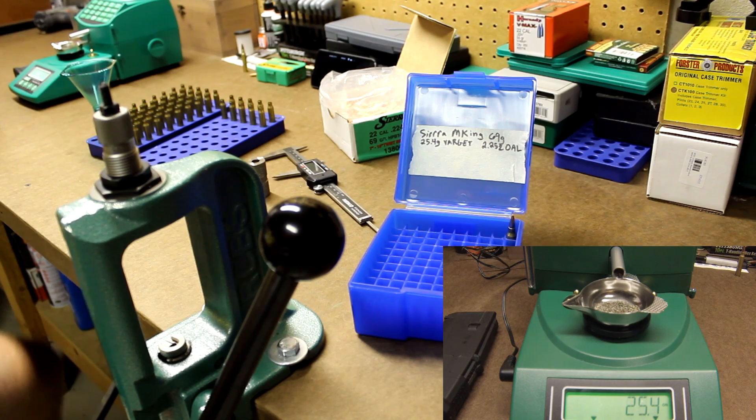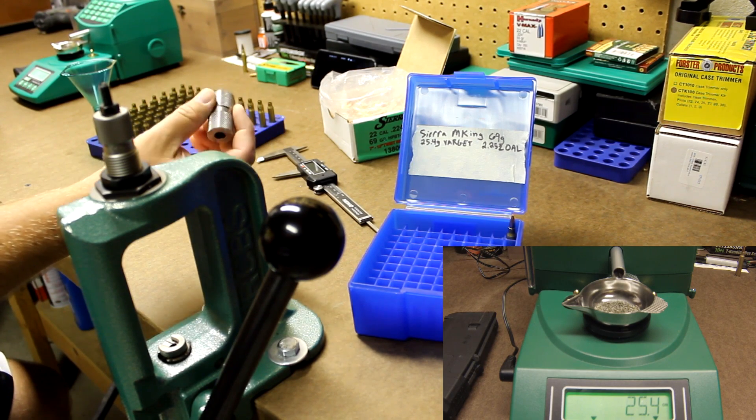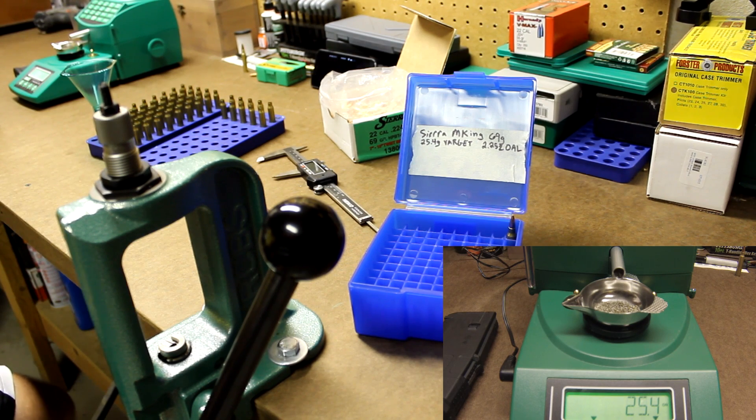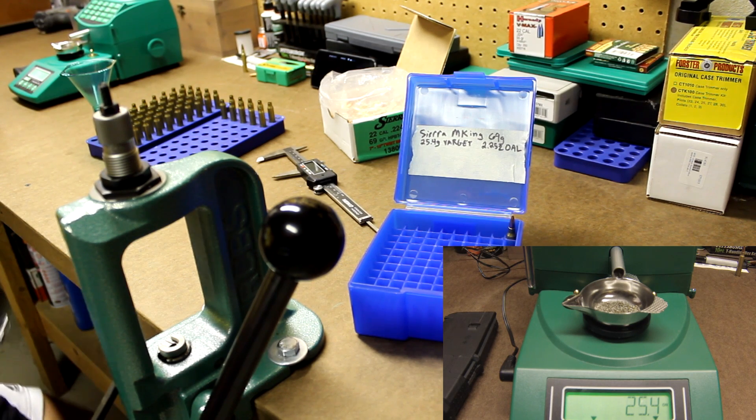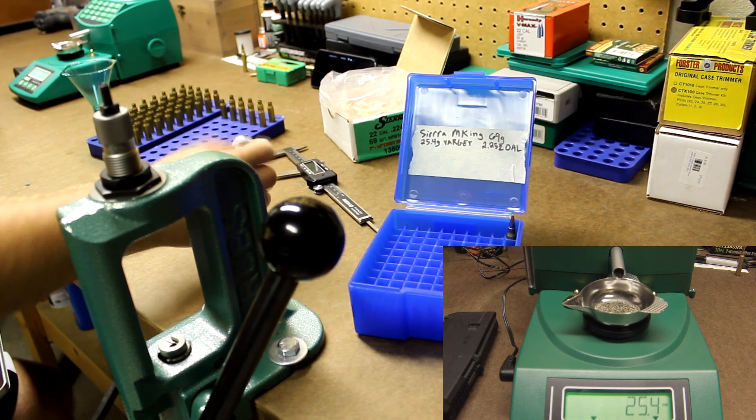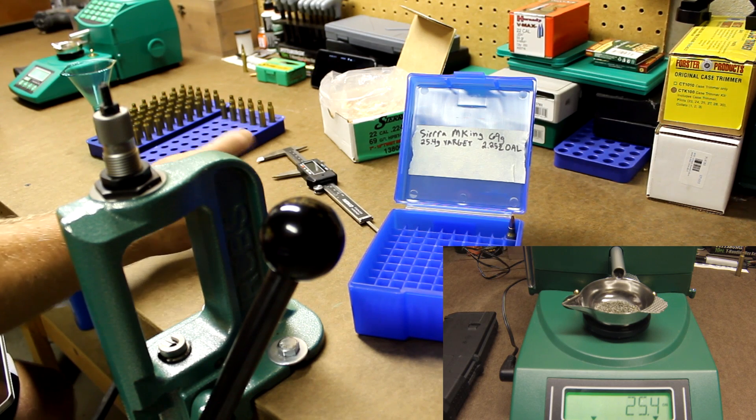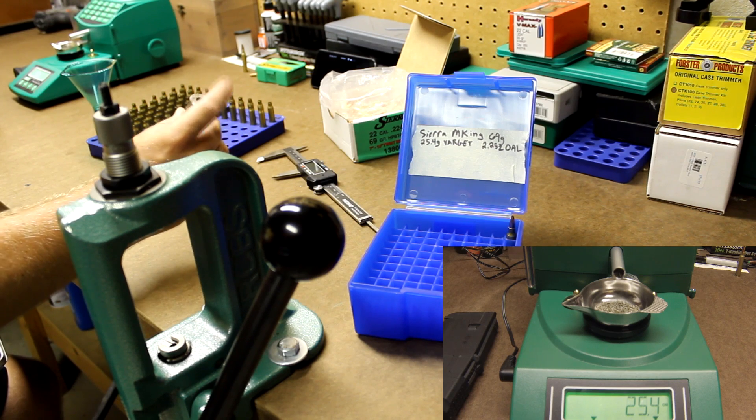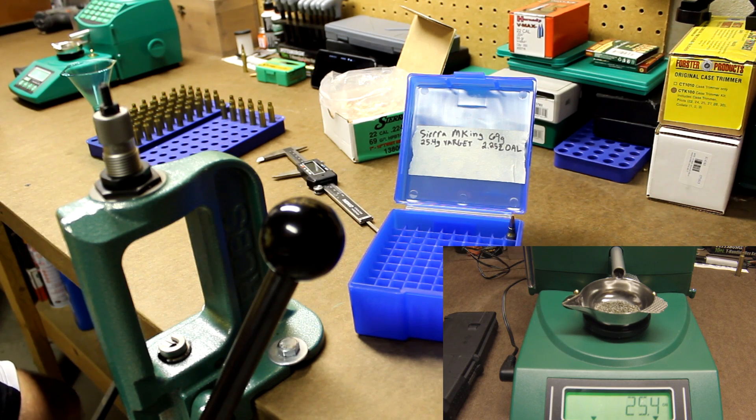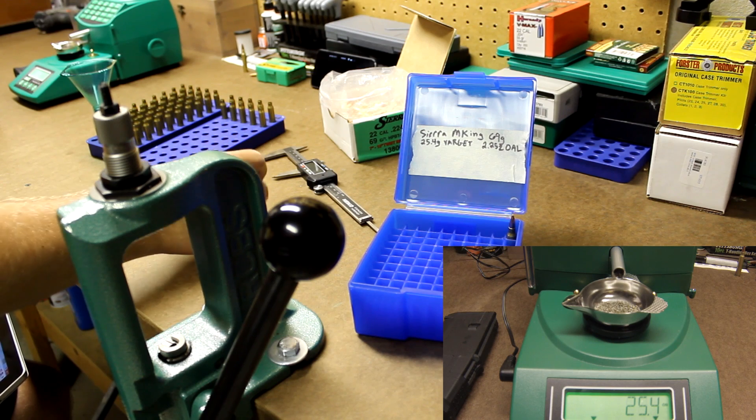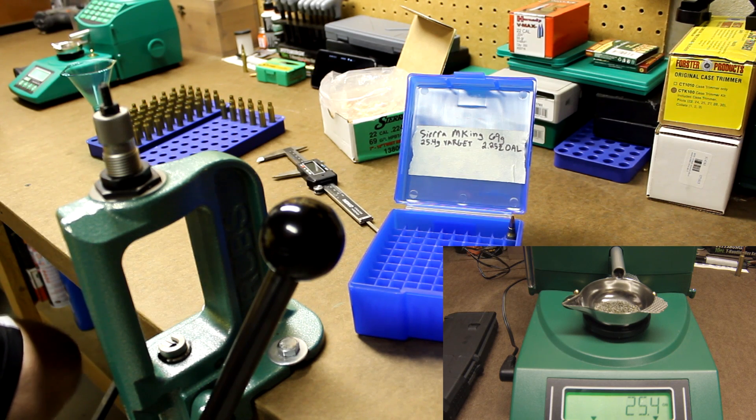This is machined to the Sporting Arms and Ammunition Manufacturers Institute, which is abbreviated SAAMI, S-A-A-M-I specs. So if the round is not in spec, it won't fit in this gauge, minus the cartridge overall length. The bullet will stick out. If it doesn't fit in here, you're going to want to put it aside in a pile and fix it.